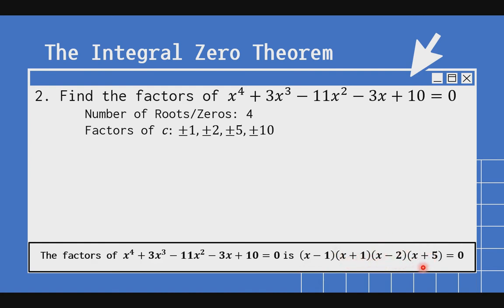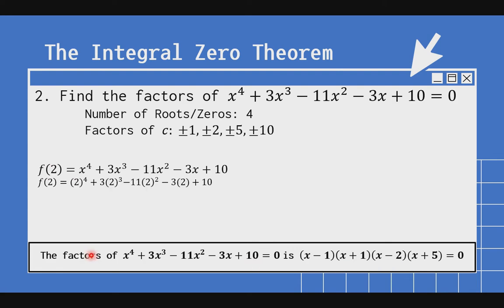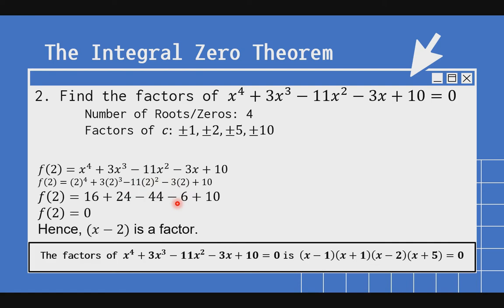Ito yung ibang factor — nakalabas na siya unintentionally pero okay lang. I-try natin ang positive 2. Kapag na-try natin ang positive 2, ibig sabihin tama itong x minus 2. Substitute natin yung 2 sa ating x: 2 raised to 4 plus 3 times 2 raised to 3 minus 11 times 2 raised to 2 minus 3 times 2 plus 10. 2 raised to 4 is 16; 2 raised to 3 is 8 times 3 is 24; 2 raised to 2 is 4 times negative 11 is negative 44; negative 3 times 2 is negative 6, plus 10. Pag pinagsama, makukuha natin 0. Dahil nag-0 siya, hence x minus 2 is a factor.